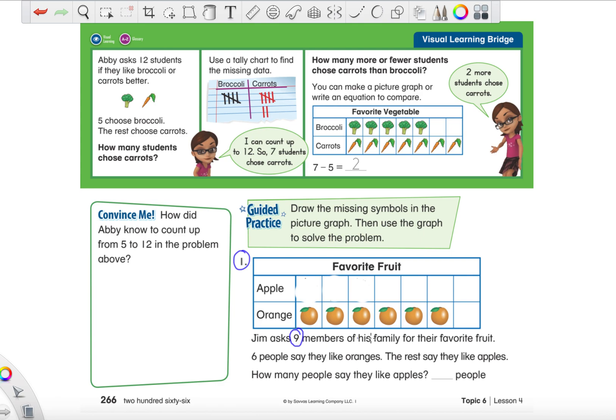So, let's read our story first and circle the important things that we hear. Jim asks nine members of his family for their favorite fruit. Well, that number nine is pretty special. That tells us the total. He's asking nine members of his family. So, we already know that on this picture graph, we should have a total of nine. Six people say they like oranges. So, right here, we have six pictures of oranges. One, two, three, four, five, and six. Okay. The rest say they like apples.